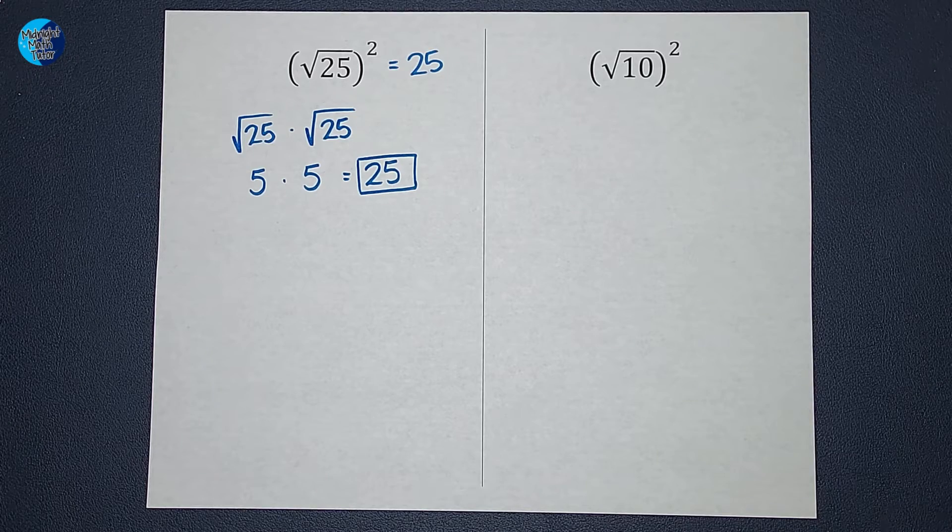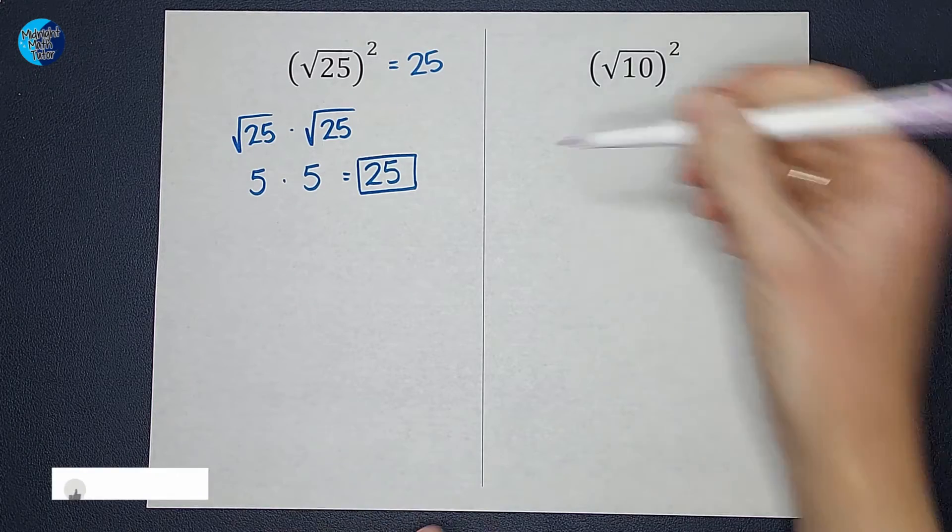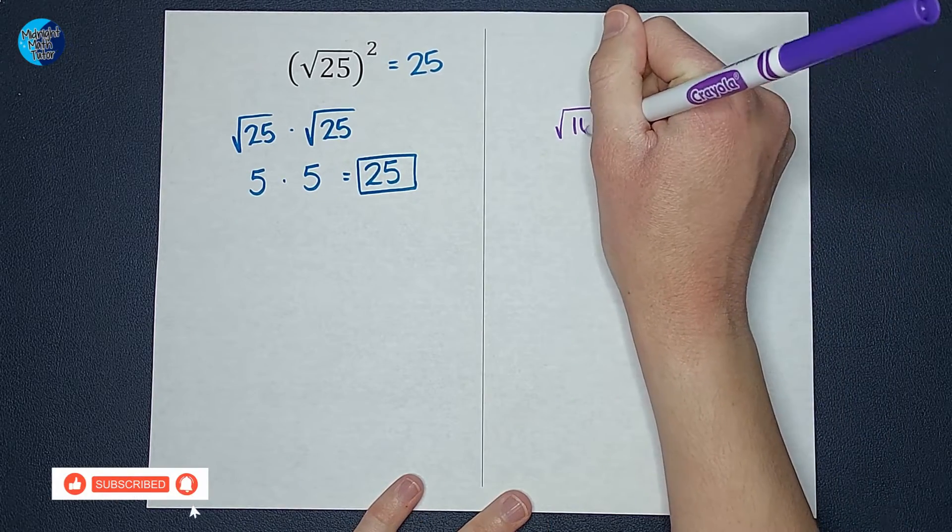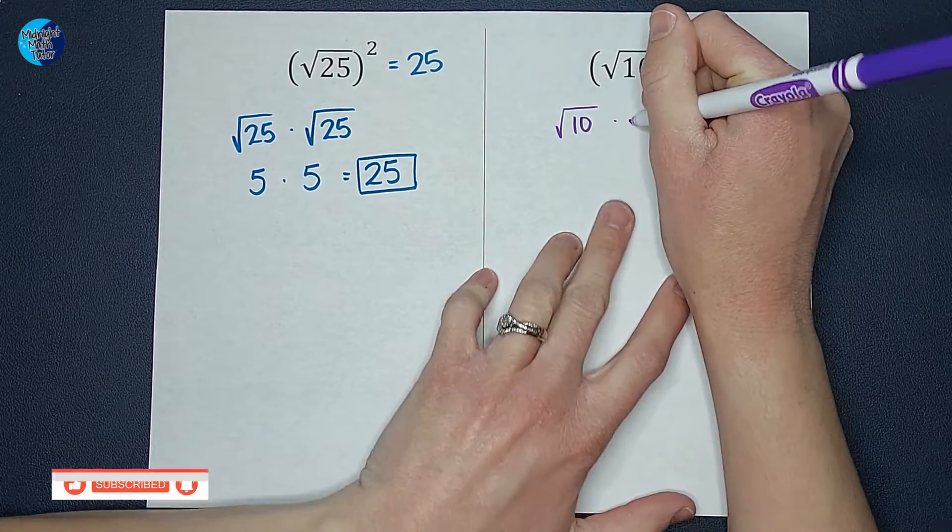Okay, let's look at another way we could explain this. So again, the square root of 10 squared is going to be the square root of 10 times the square root of 10.